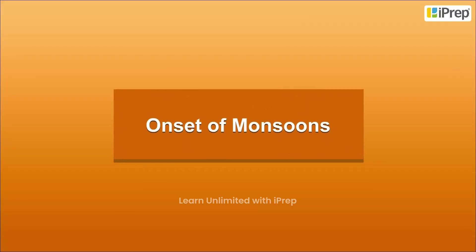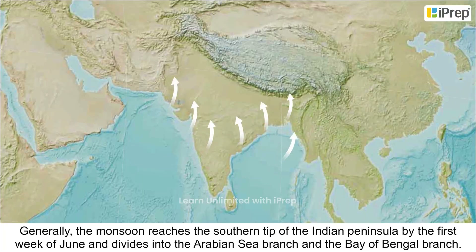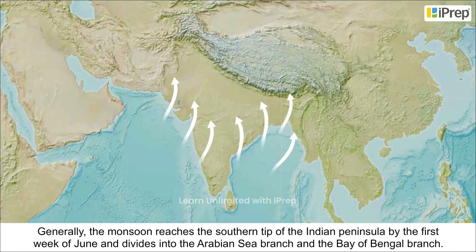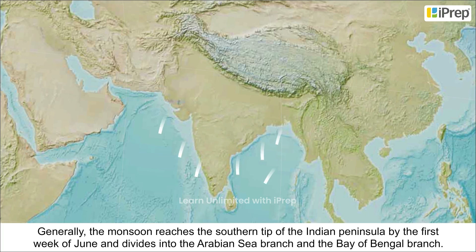Onset of Monsoons. Generally, the monsoon reaches the southern tip of the Indian Peninsula by the first week of June and divides into the Arabian Sea branch and the Bay of Bengal branch.